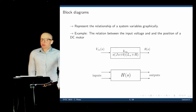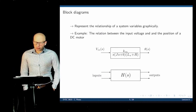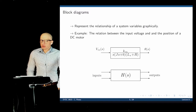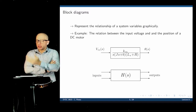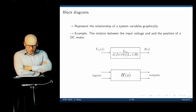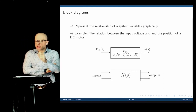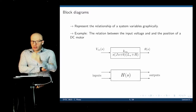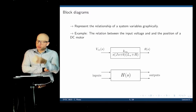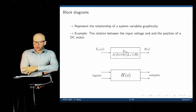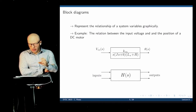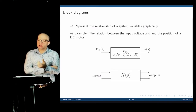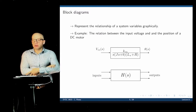The main idea is to represent the relation between variables graphically. We want to represent input-output relations in the form of a block — that's what we call the transfer function. In a transfer function, we get an input, pass it through a function, and get the output. This transfer function goes into a block representing that operation. We can also have a system with multiple inputs and multiple outputs, where H(s) represents that system.